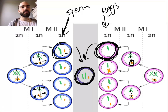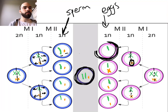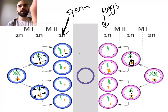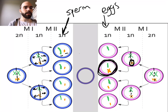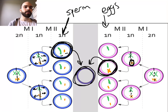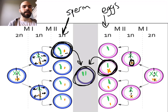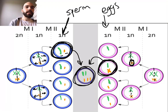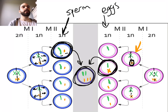But how would an individual end up with an extra chromosome? If the egg that retained both orange chromosomes due to non-disjunction were to combine with a sperm, you'd get two copies of the green chromosome — correct — but three copies of the orange chromosome: one from dad and two from mom. So that individual would have an extra chromosome. That's how non-disjunction leads to a chromosomal disorder — when a chromosome fails to separate, you can end up with either too few or too many chromosomes.